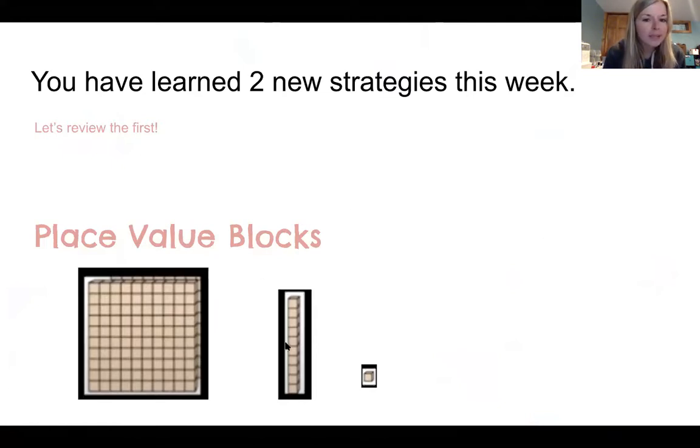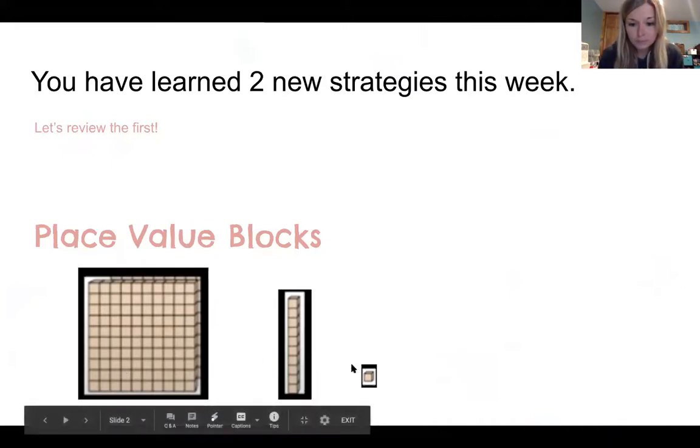We have been using place value blocks with those triple digit numbers. We know that this is representing 100, this is representing 10, and this is representing one. So when we see a number in the hundreds place we use this piece, the tens place we use this piece, and last we use this piece for the ones place.